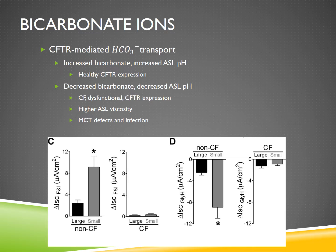Decreased bicarbonate ion transport, which would be characteristic of cystic fibrosis lung epithelial cells, relates to decreased airway surface liquid pH, which causes higher airway surface liquid viscosity. A more acidic environment creates a more viscous airway surface liquid, and that increased viscosity relates to poor mucociliary transport — a poor ability to get rid of bacteria and mucus that could cause infections.